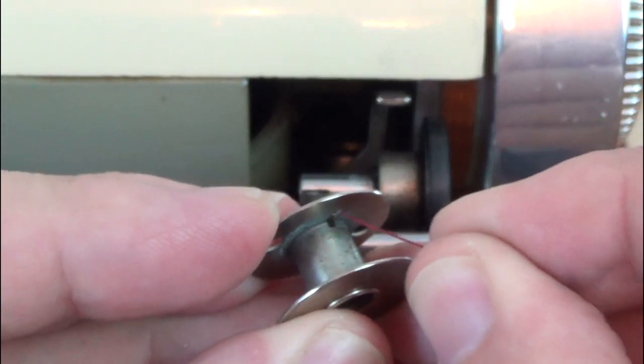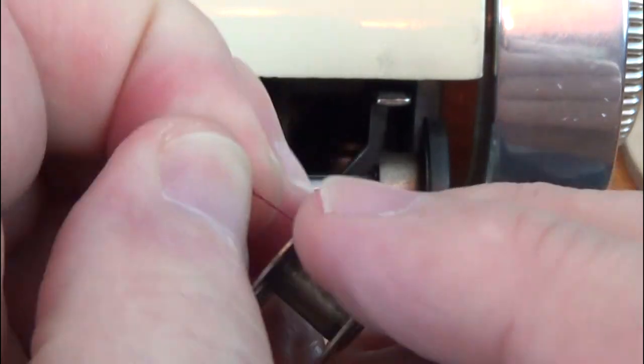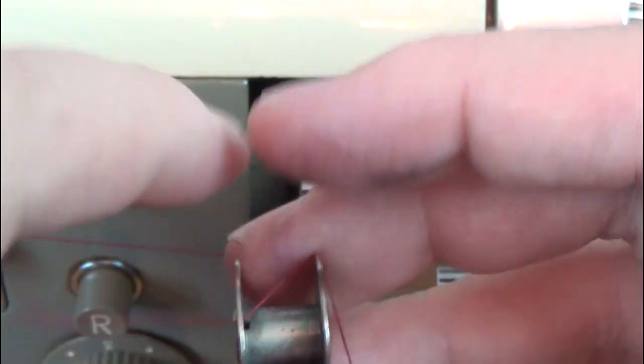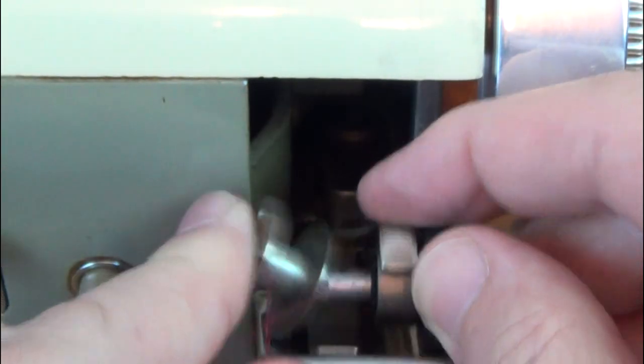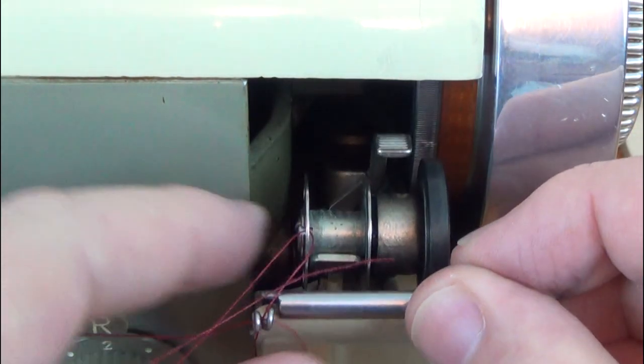Pass the thread through the hole in the bobbin and mount on the bobbin winder, which also disengages automatically when the bobbin is full.